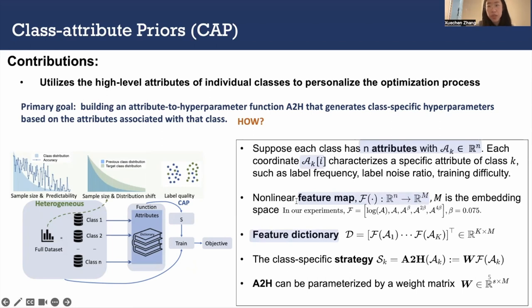Then A2H can be parameterized by a weight matrix. Our goal becomes finding W so that resulting strategy maximizes the target validation objective. W ties all classes together during training through weight sharing, so it could protect the training of small classes.